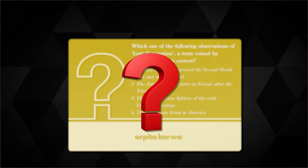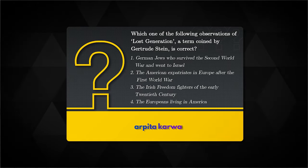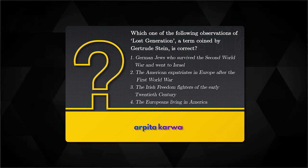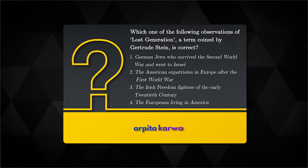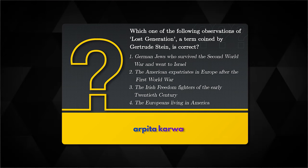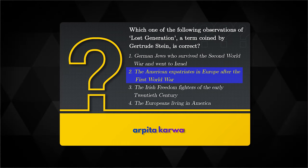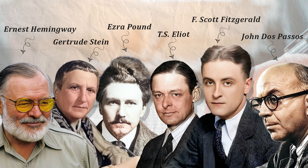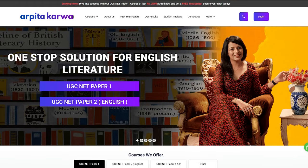Before we end the video, here is a question that was previously asked in the UGC NET English exam: 'Which one of the following observations of lost generation, a term coined by Gertrude Stein, is correct?' The correct answer is option two: the American expatriates in Europe after the First World War. That was all about lost generation writers. Please subscribe and stay tuned for more such informative videos.